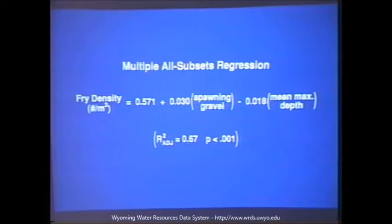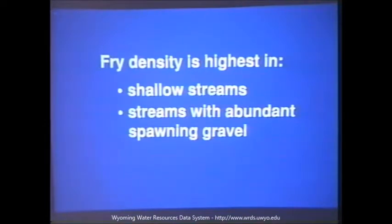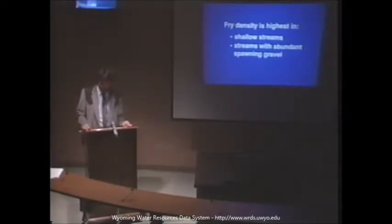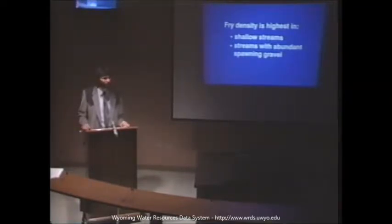To analyze the data, we conducted a multiple all-subsets regression. The analysis told us that fry density in numbers per meter squared was positively related to spawning gravel and negatively related to mean maximum depth. The relationship was highly significant. This means that fry density was highest in shallow streams and streams with abundant spawning gravel. The key finding was that we didn't find a relationship between channel type and fry density. The three highest densities were found in C, B, and A channels, and the three lowest were also C, B, and A channels. Despite gross geomorphic differences in stream channels, those streams could provide adequate habitat for fry if they were shallow and had abundant spawning gravel.